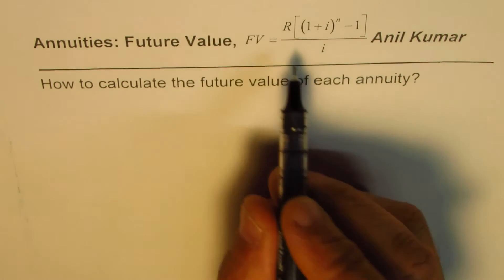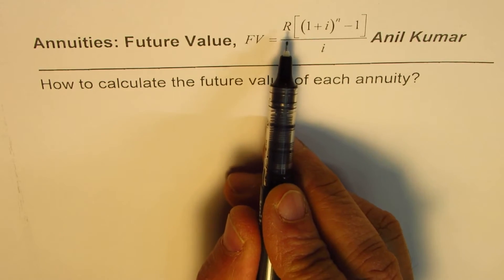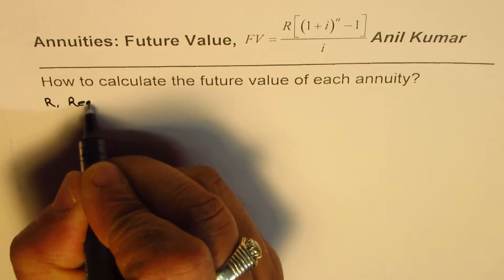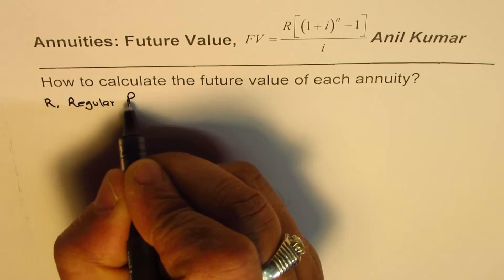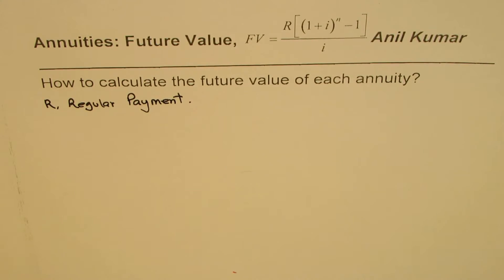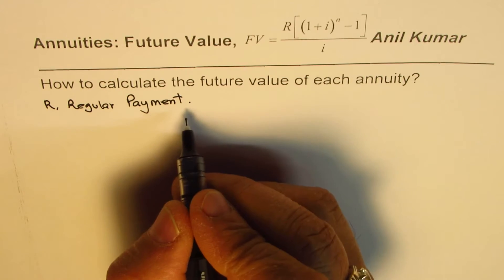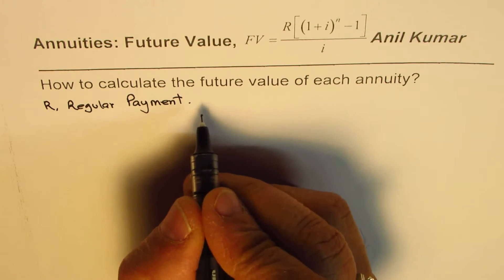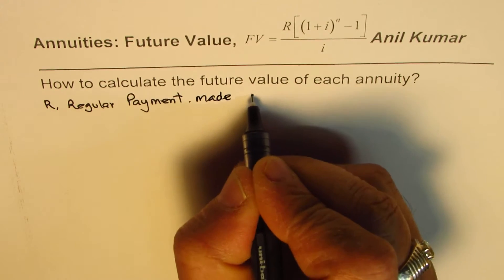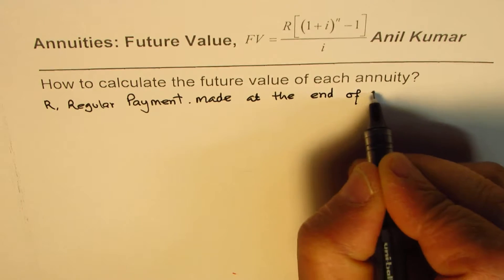One of the important parameters is R, which we call regular payment. R is the regular payment. In any question of annuity, this will always be done at regular intervals of time — in dollars, regularly at the end of the period. Regular payment is made at the end of the compounding period.